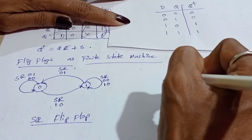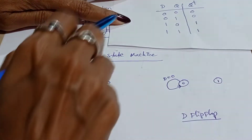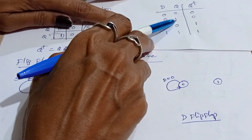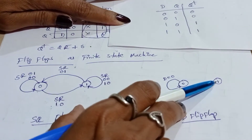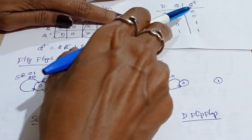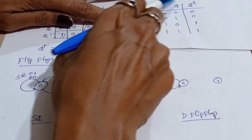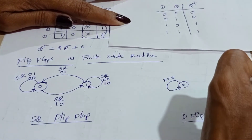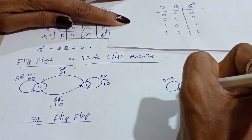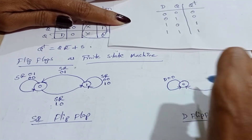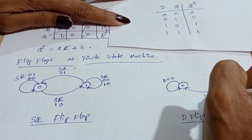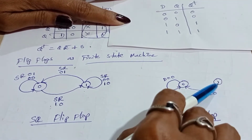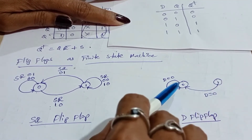Next, when D is 0 and Q is 1, it is changing to state 0 — that is when D is equal to 0, changing from state 1 to state 0.